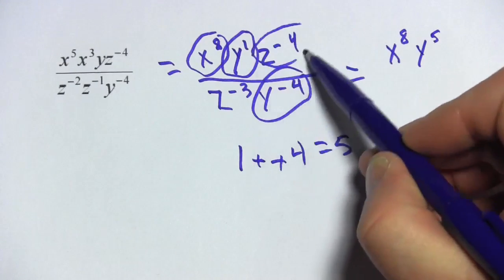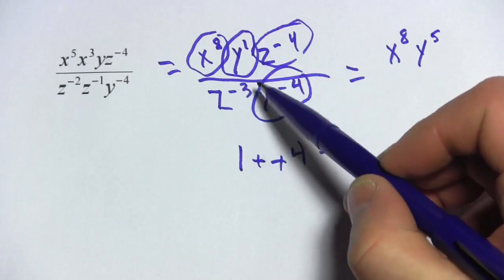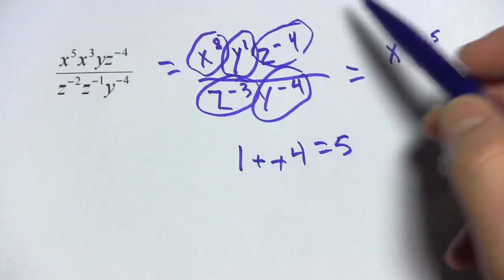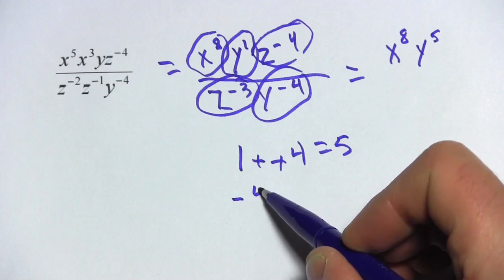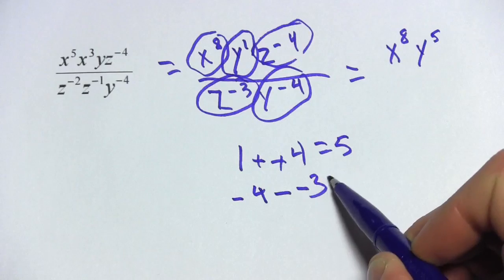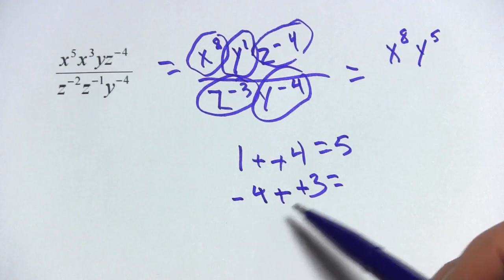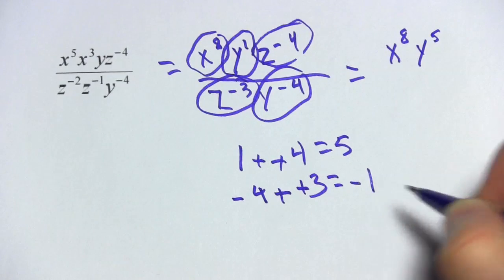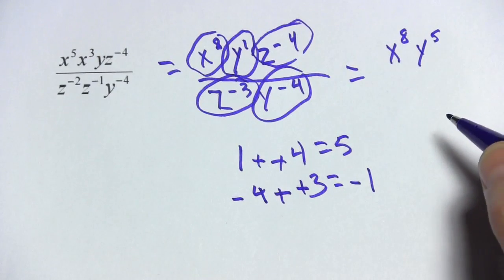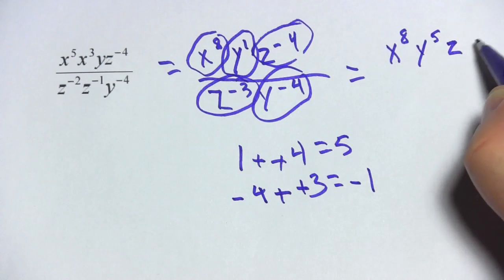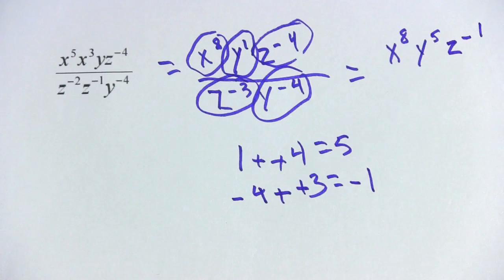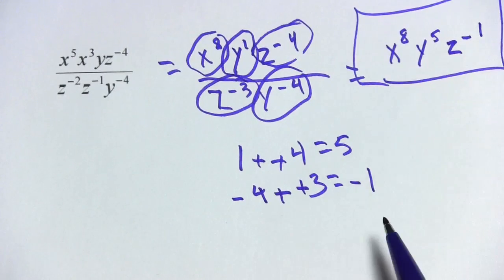Now let's do the z's. I have z to the negative 4 and z to the negative 3. So this becomes negative 4 minus a negative 3. And of course minus a negative 3 is the same as plus 3. So negative 4 plus 3, that's a negative 1. So what I get on the top here is z to the negative 1. And that is my answer.